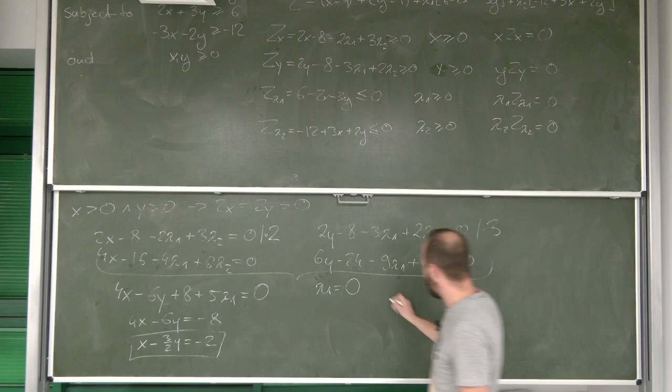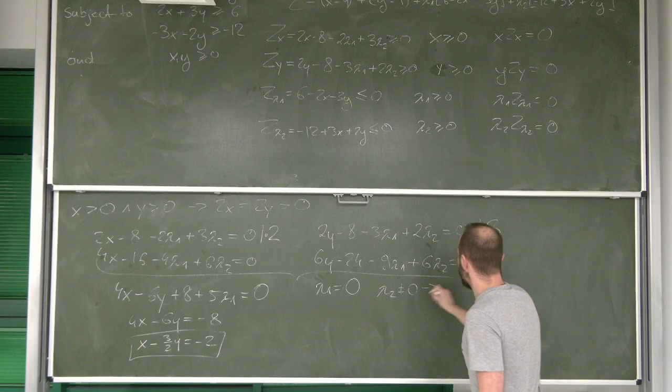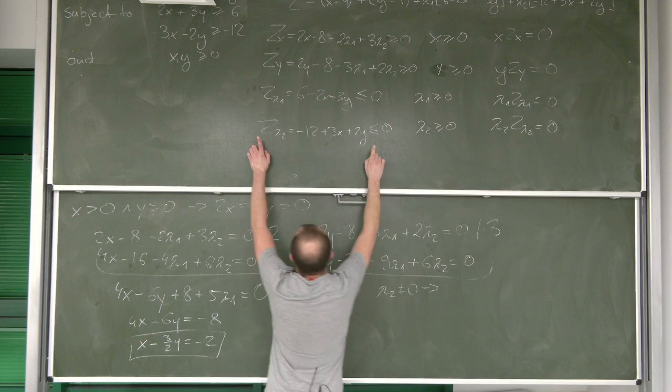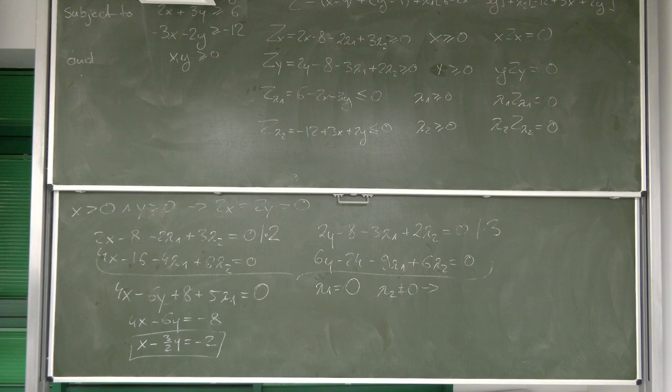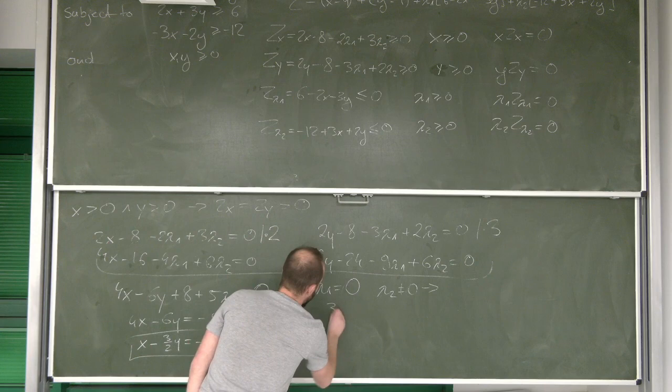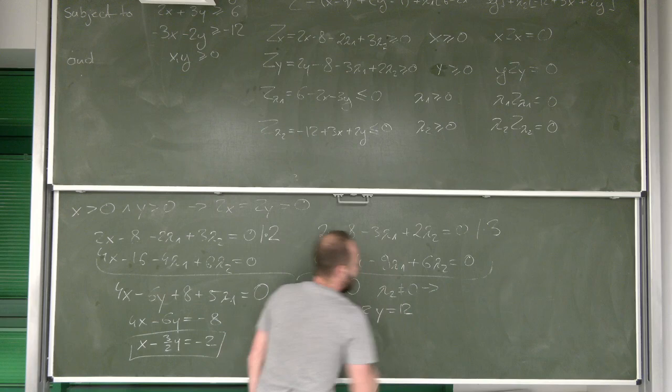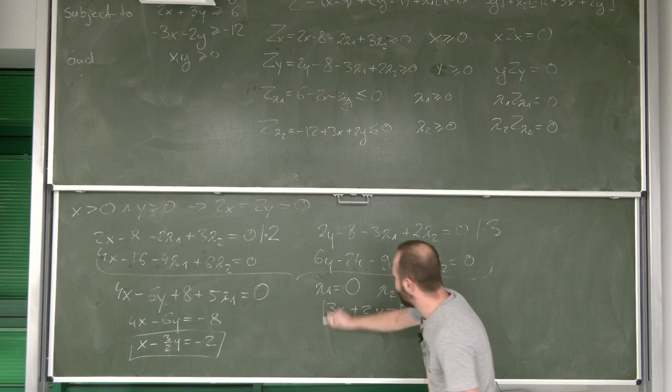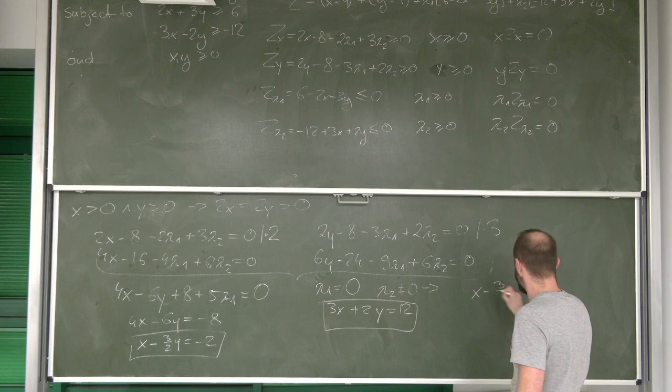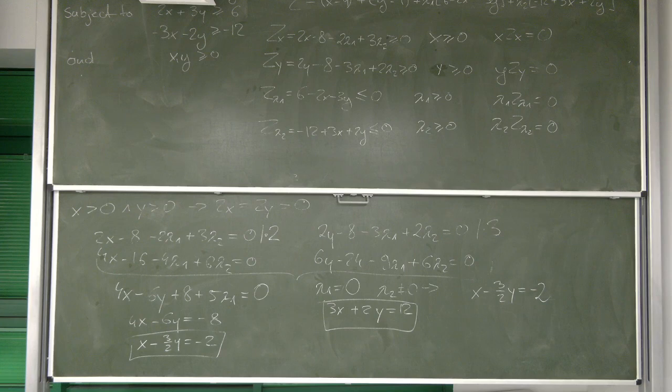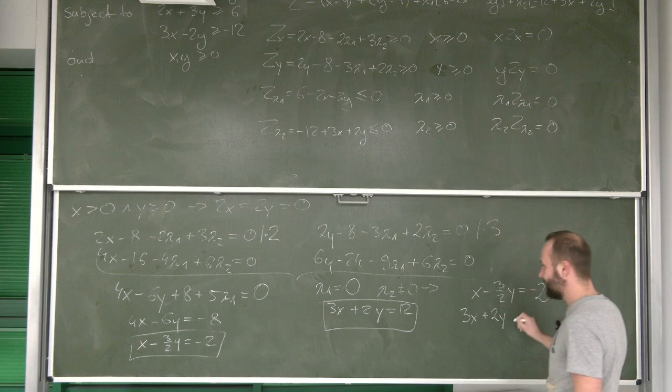So what else can we assume? Let's assume now that lambda 2 is different than 0. This of course implies that z lambda 2 needs to be equal to 0. So we're going to get a second equation. Equation that we're going to get is going to be 3x plus 2y equals to 12. And look, I can make a system out of these two equations. So I'm going to get x minus 3 over 2y equals to negative 2. And then 3x plus 2y equals to 12.